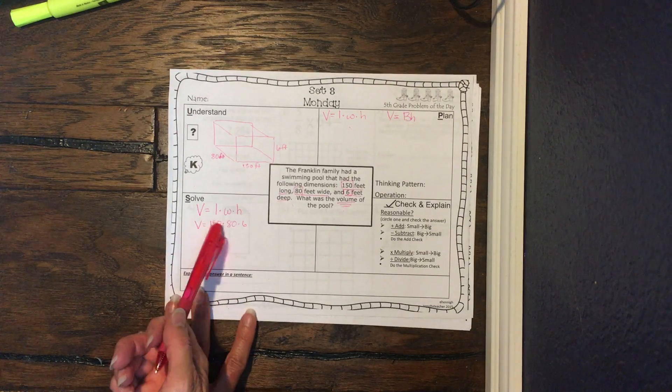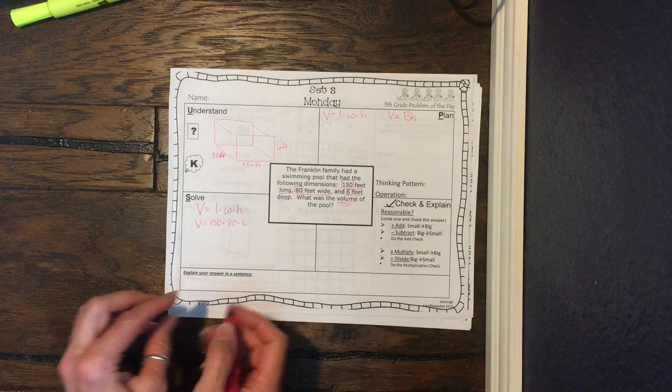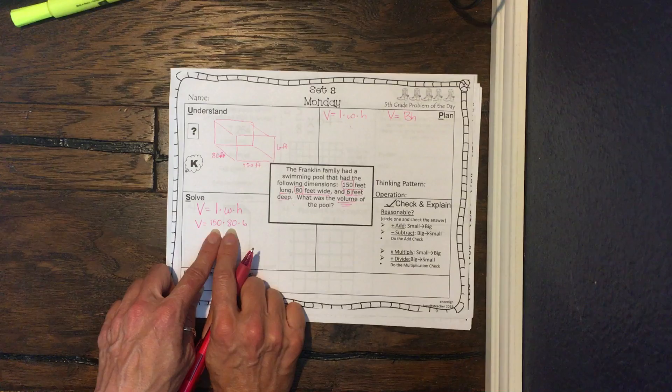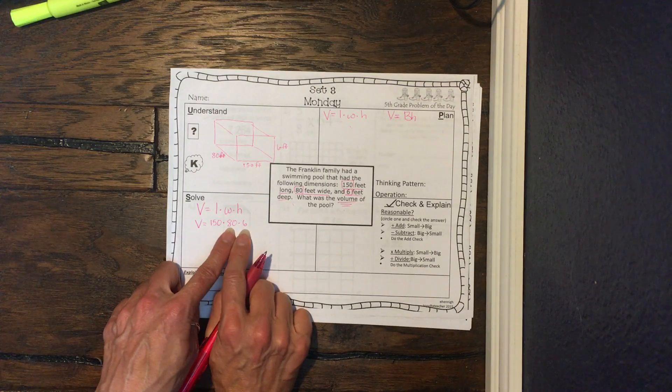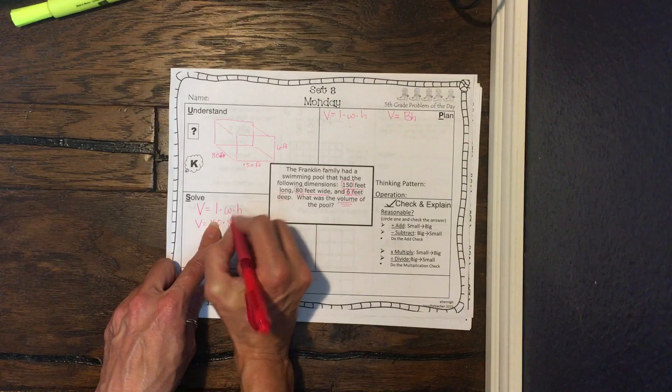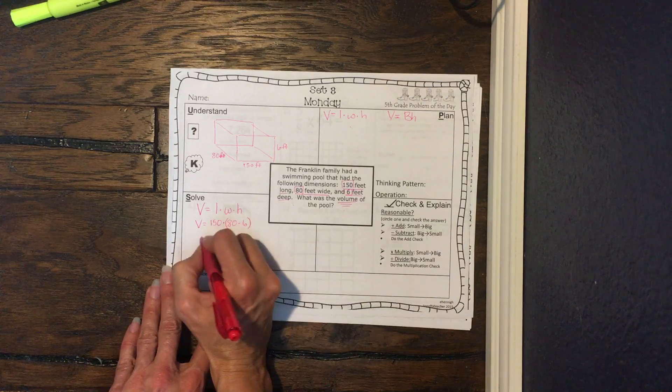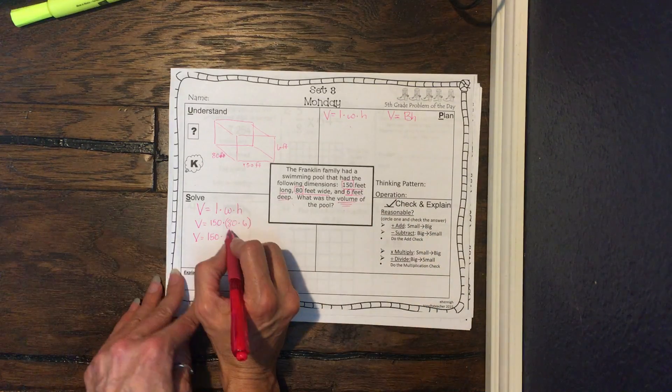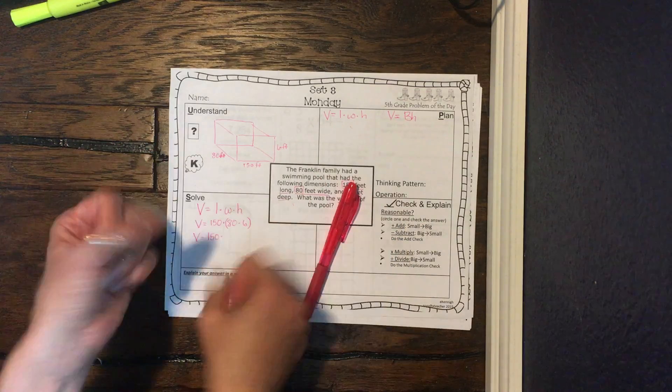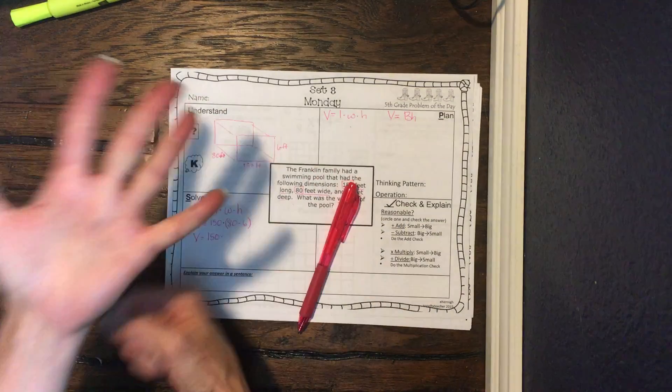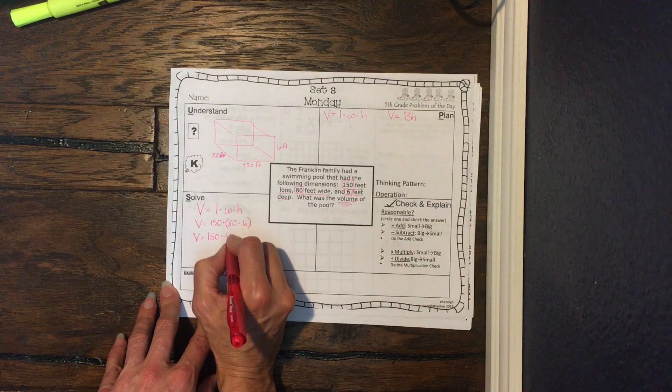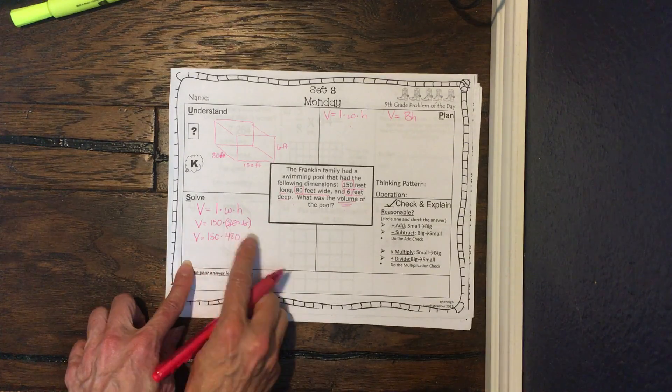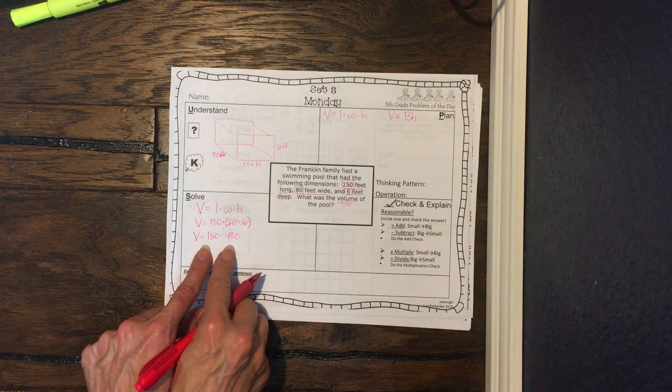So then we're going to look at this and say, is there anything here we can do mentally that we can do without having to come and actually do the math? Well, I don't think I could probably do 150 times 80, but I know I can do 80 times 6, because it's not really 80 times 6, right? It's really 8 times 6, and we're going to add a zero. So 8 times 6, let's sing our 8 song. So 8, 16, 24, 32, 40, 48. So we're going to write 48, but we're going to add a zero. So we've done that part of our expression, and now we're down to this last thing.